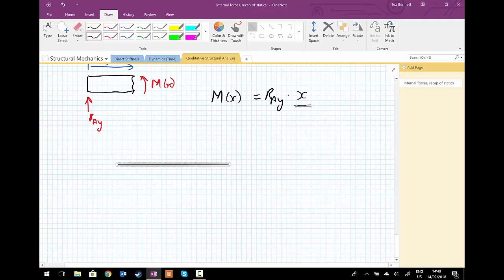So I have my beam and on there I'm going to add and draw the free body diagram. I now know the directions of the reactions and I have the moment at the centre.